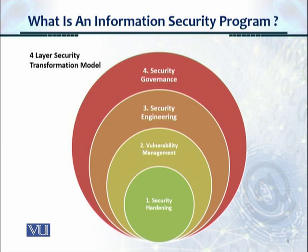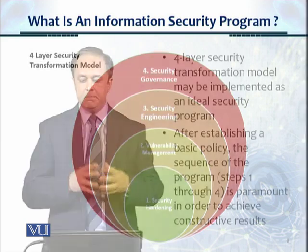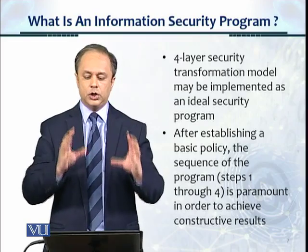Here is another diagram showing the four-layer security transformation model which Delta Tech implements as a consulting company across Pakistan, and which has been implemented very successfully. The four stages are: first, security hardening; second, vulnerability management; third, security engineering; and fourth, security governance. This is an effective transformation model that fixes the security of an organization and can be implemented as an ideal security program.